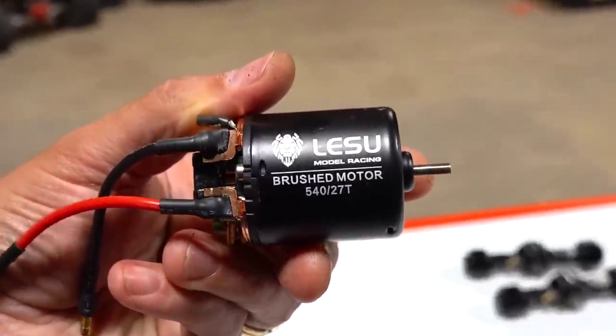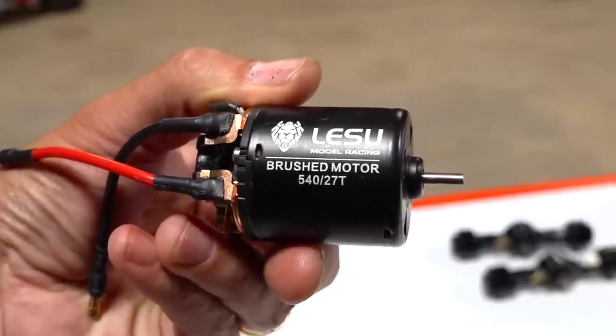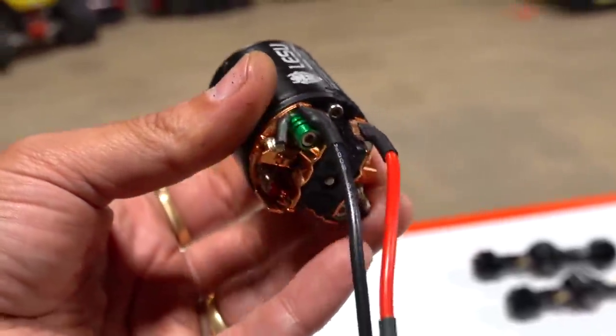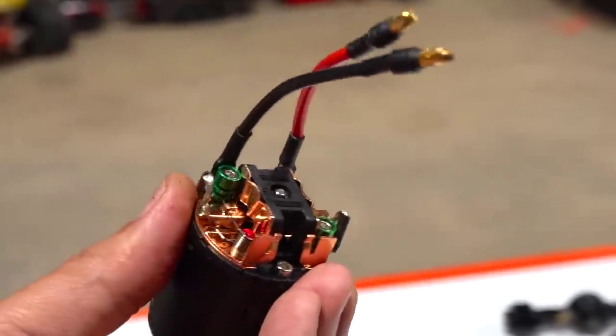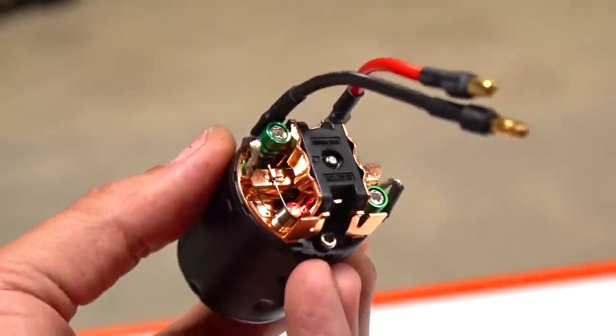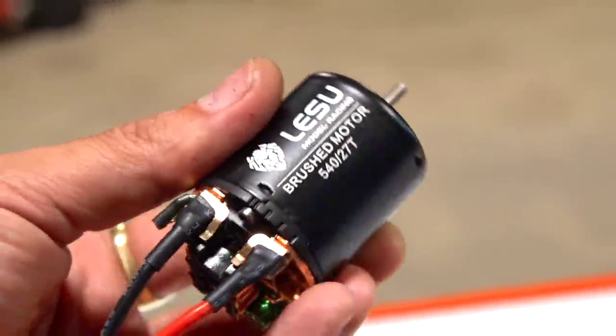So here is the motor that's going to be responsible for moving the whole machine forward and backward. You can see here, it's a canned 540 27 turn brushed motor. That means it has a couple of brushes that push up against the comm, positive and negative charge, makes it go forward and backwards. Yes, this is a rebuildable motor. That's nice to know.